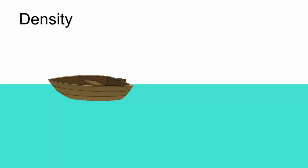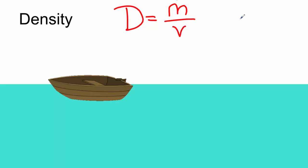It all happens with an understanding of density. First we need to understand that density is equal to mass divided by volume. Sometimes we'll draw a heart to help remember the formula — it's mass over volume.